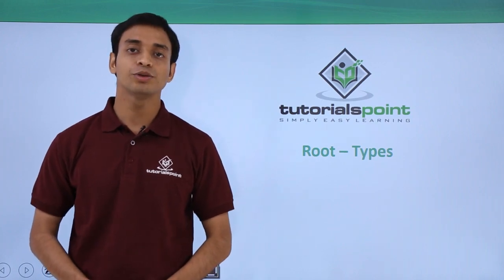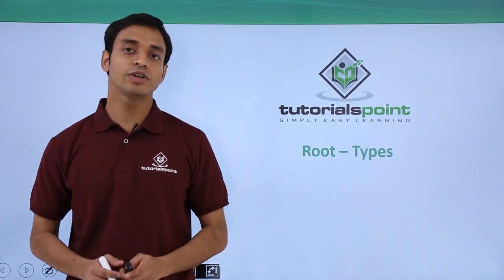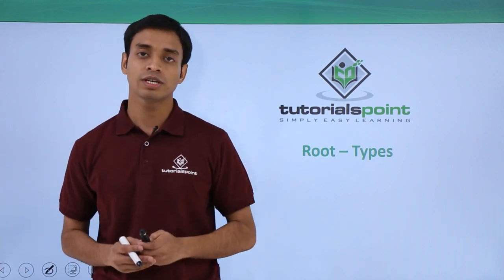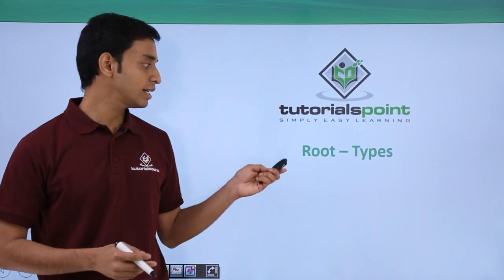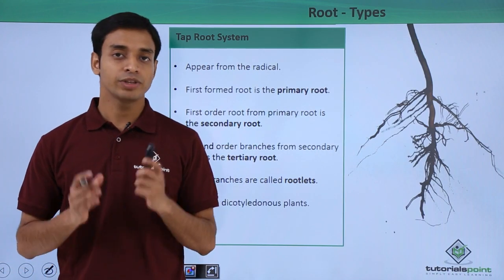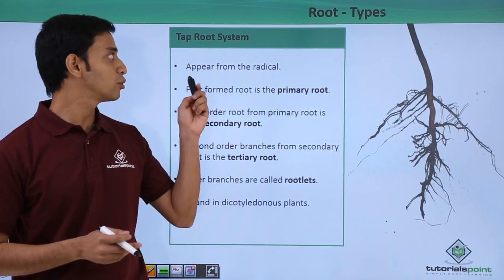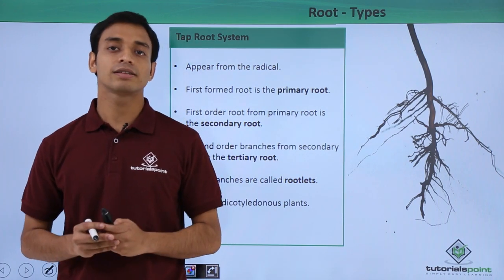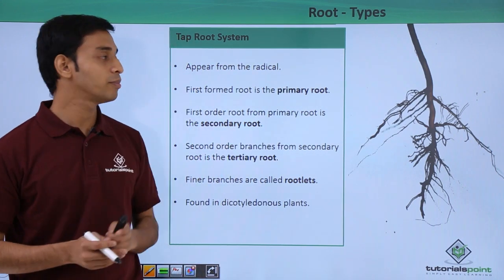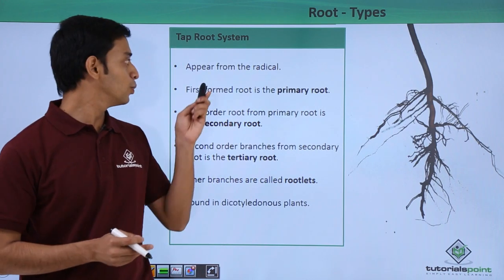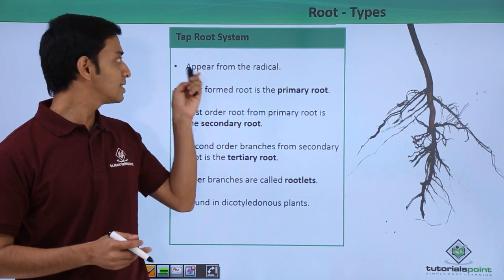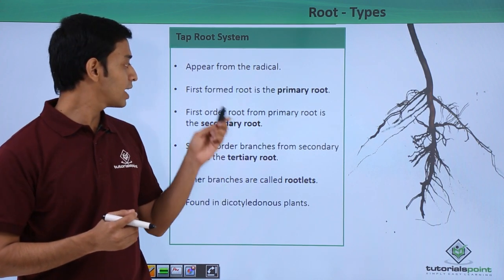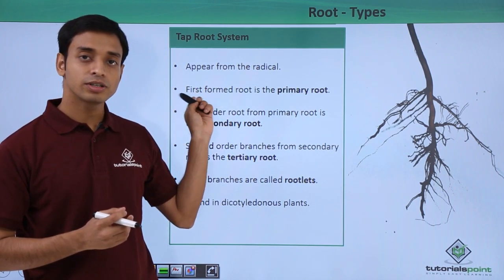Hello everyone, welcome to Tutorials Point. In this video we are going to discuss the different types of roots that are mostly found. There are mostly two types: the tap root system and the fibrous root system. Let us first discuss the tap root system. These tap roots appear mostly from the radicle.